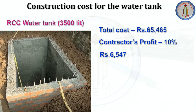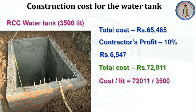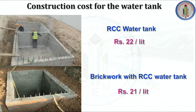Total cost for the brickwork with RCC water tank comes to approximately 65,465 rupees. Adding 10 percent contractor's profit of 6547 rupees, the total cost becomes 72,011 rupees. Cost per liter is 72,011 divided by 3500, which equals approximately 20.57 rupees — about 20 rupees per liter. For comparison: RCC water tank costs 22 rupees per liter, and brickwork with RCC costs 21 rupees per liter.